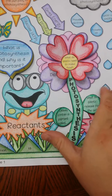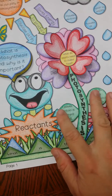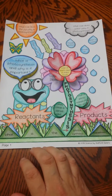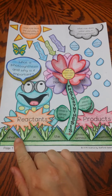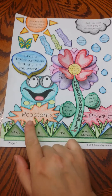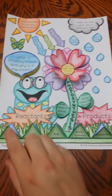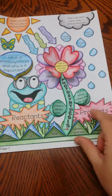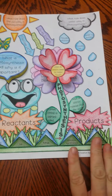Another thing that folds is the leaves — the leaves will pop up as well. What's really nice is you have the equation for photosynthesis. The first three are the reactants and then the next two are the products. You can see the different reactants and the two products.